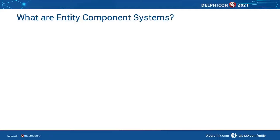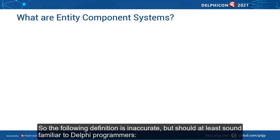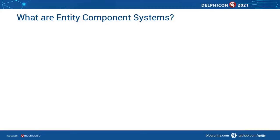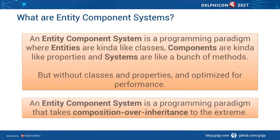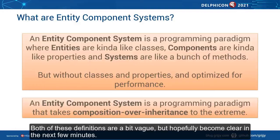It's hard to come up with a concise definition of an ECS, so the following definition is inaccurate, but should at least sound familiar to Delphi programmers. An entity component system is a programming paradigm where entities are kinda like classes, components are kinda like properties, and systems are a bunch of methods — but without classes and optimized for performance. Or using different terminology, an entity component system is a programming paradigm that takes composition over inheritance to the extreme. Both of these definitions are a bit vague, but hopefully become clear in the next few minutes.